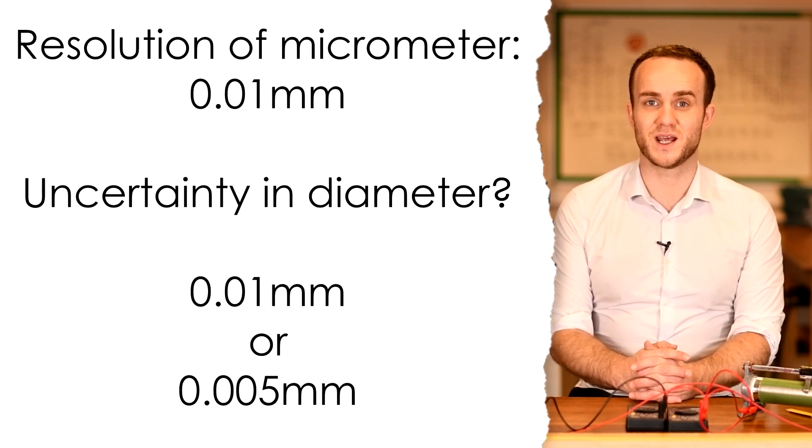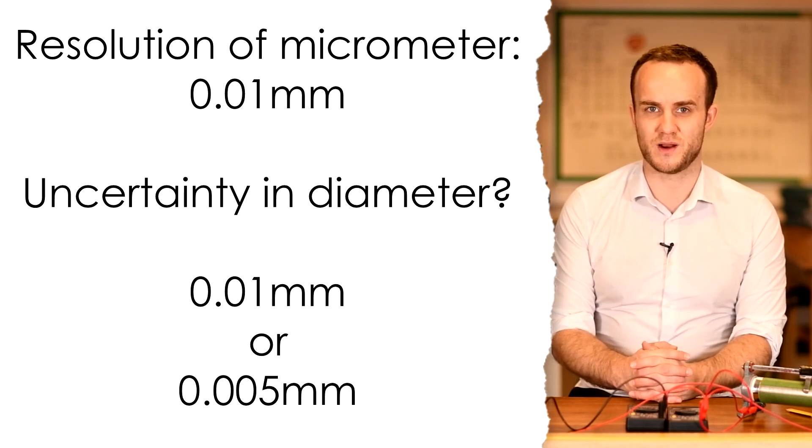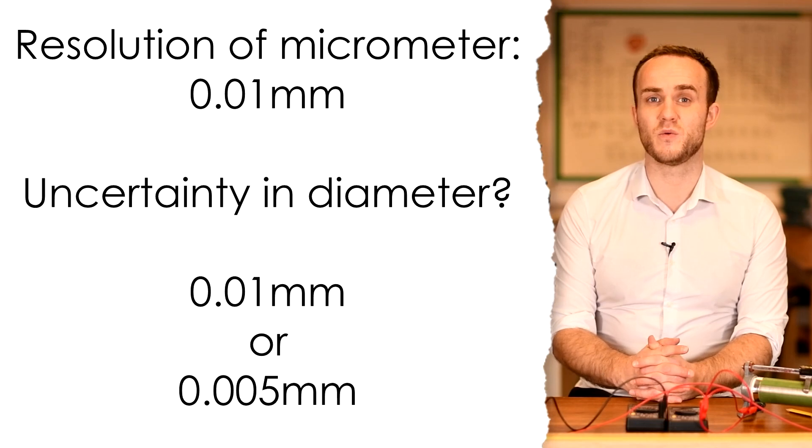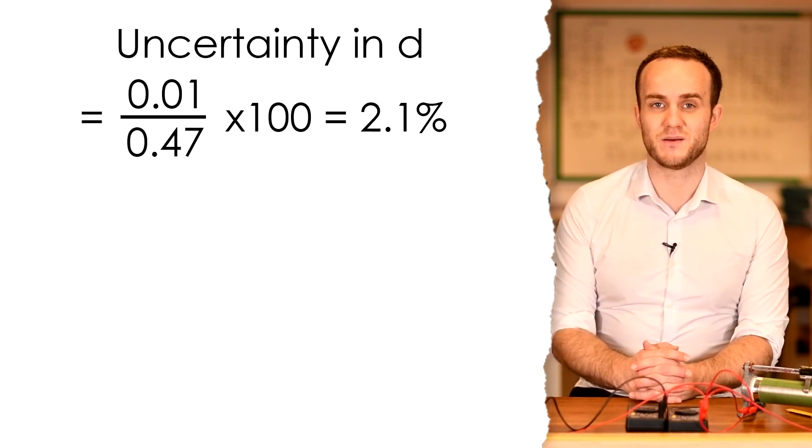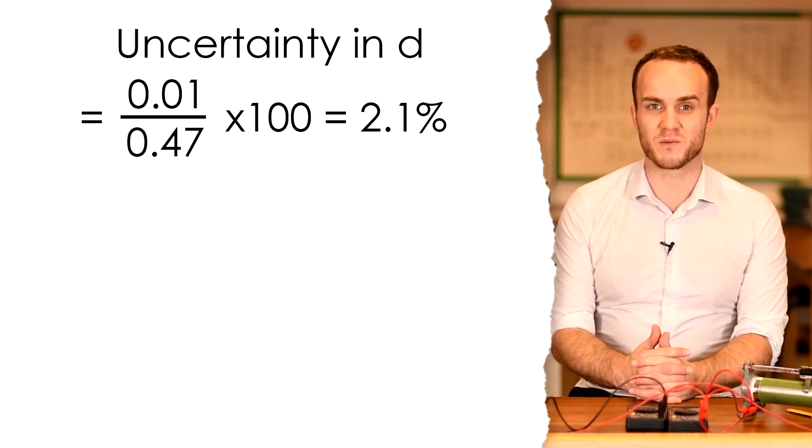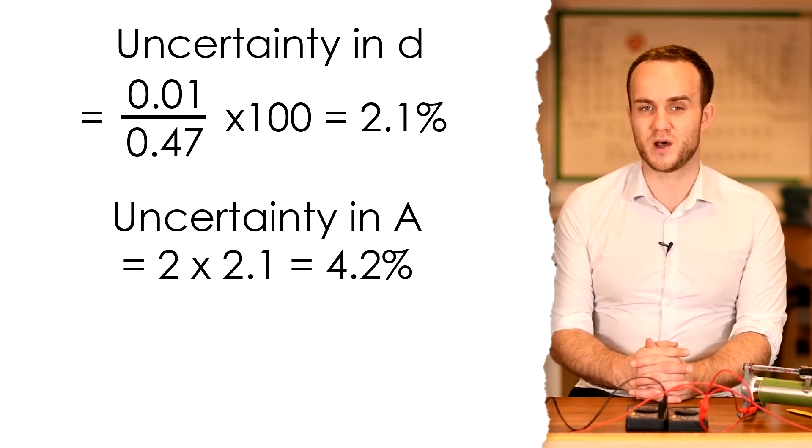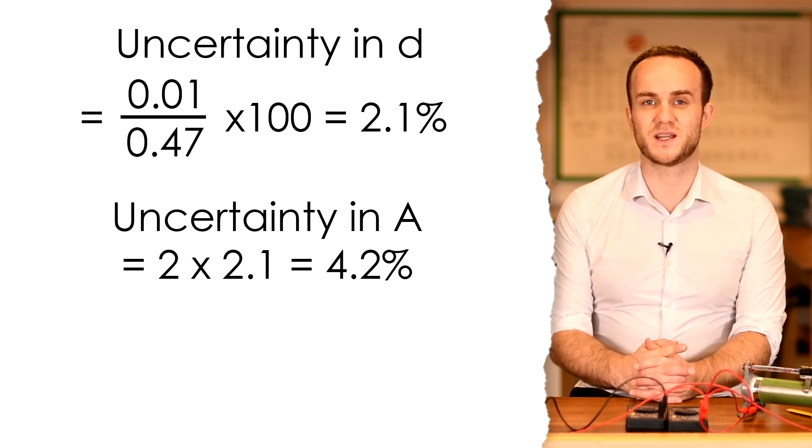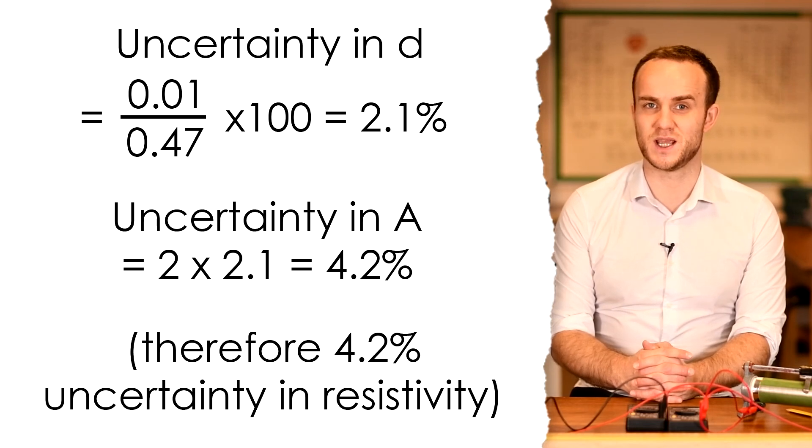The uncertainty in this experiment is fairly low so long as you measure your PDs and currents to 3 sig figs. The only real uncertainty is going to be in the cross-sectional area. Now the resolution of the micrometer was 0.01 millimeters. Now there is some debate as to whether the absolute uncertainty in our value for the diameter should be 0.01 or should be half that, half the resolution, because there shouldn't be any zero error. However, the exam boards have pretty much said that they'd be okay with either. And erring on the side of caution, I'd say that the uncertainty is 0.01 millimeters. So the percentage uncertainty in our diameter is going to be 0.01 divided by 0.47 or just 1 divided by 47 times 100. And that gives us 2.1%. However, the area is calculated by pi d squared over 4. So therefore, to find the percentage uncertainty in d squared, we double the 2.1 to get 4.2%. And so that means that we have a 4.2% uncertainty in the area as well.